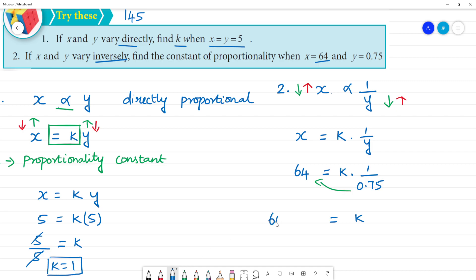Now 64 multiplied by 0.75. So multiply, 75 multiplied by 64. Now 0.75. 5, 4s are 20, remainder 2. 7, 4s are 28, 30, 0. 6, 5s are 30, remainder 3. 7, 6 are 42, 42 plus 3 is 45. So now 0, 0, 8, 4. Two decimal point. 1, 2, last two decimal. What is k? k is equal to 48.